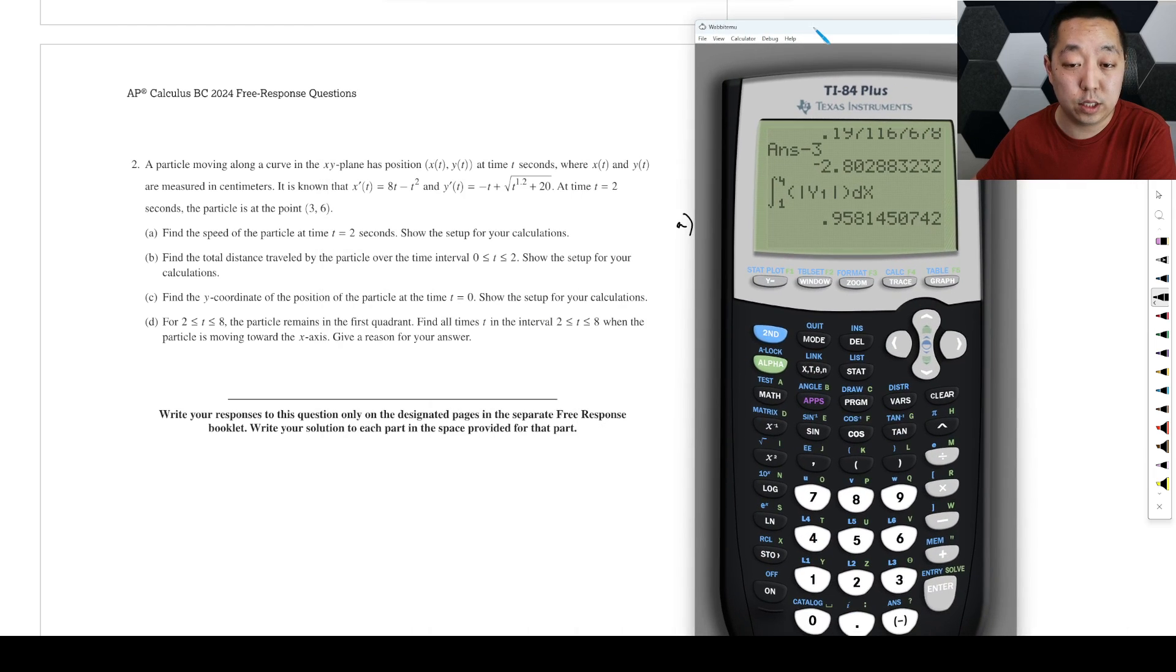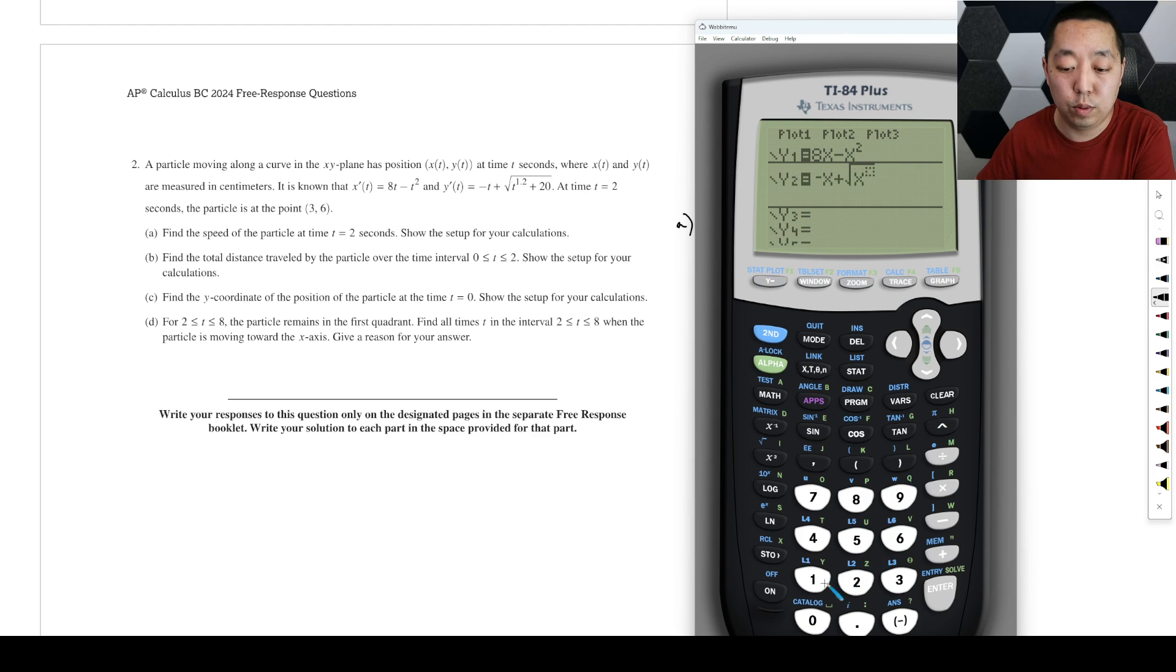So let's just go and set up our calculator. What's the process we do to set up our calculator? We're going to plug in, we'll say y1 is going to be the first variable, the first function x minus x squared. And then the second function is going to be negative t plus square root of t raised to the 1.2 plus 20. So just make sure that you want to double check that I typed those in correctly.